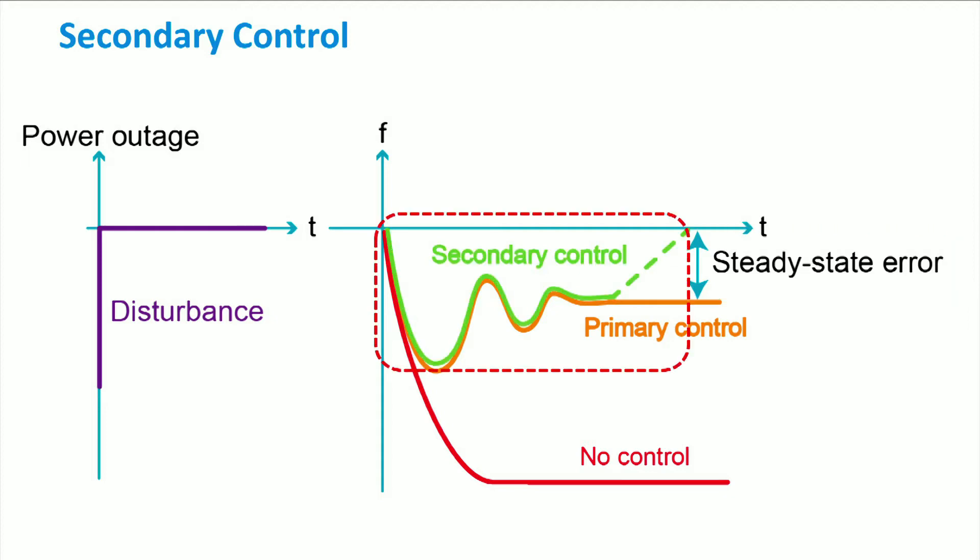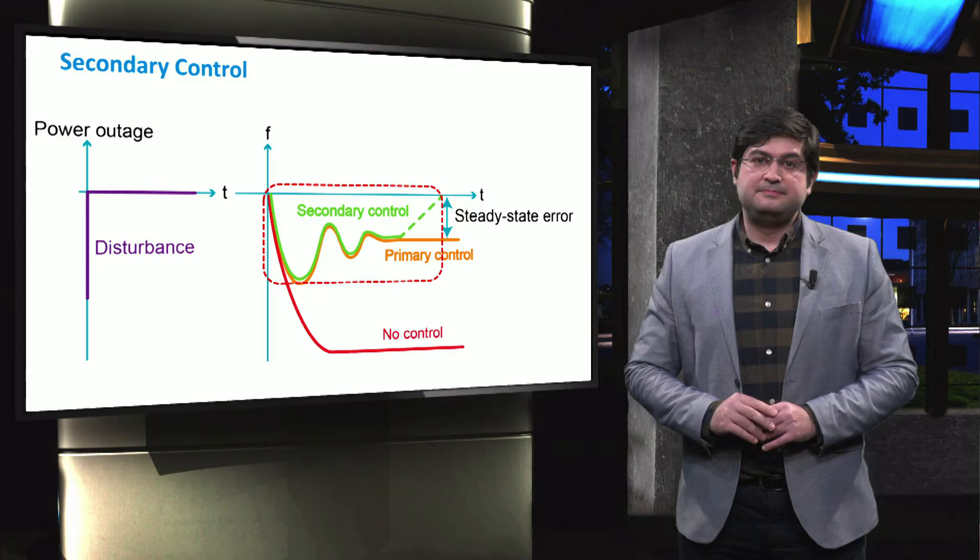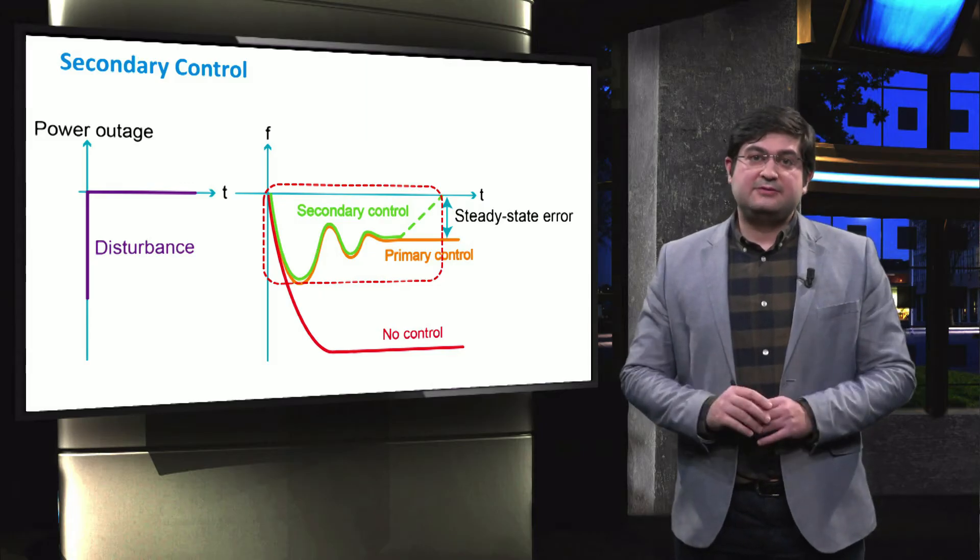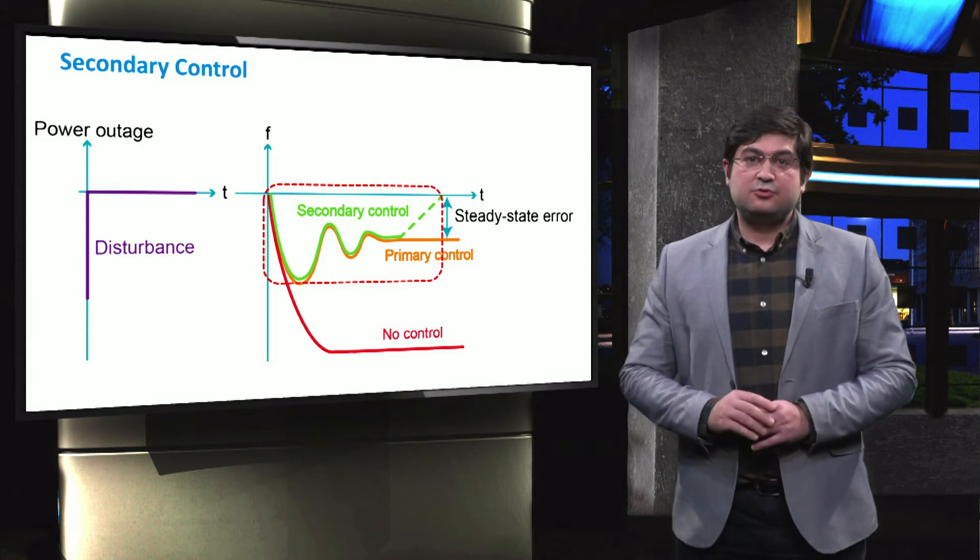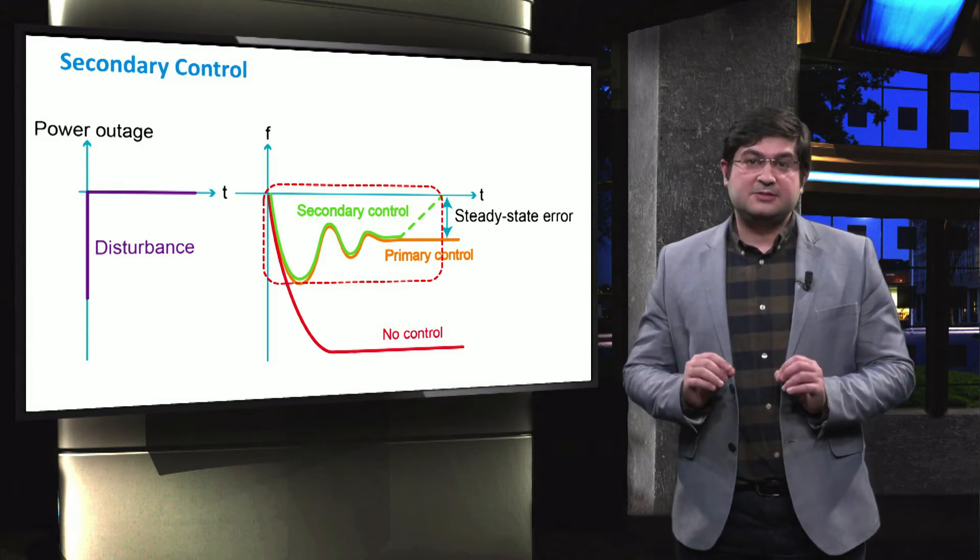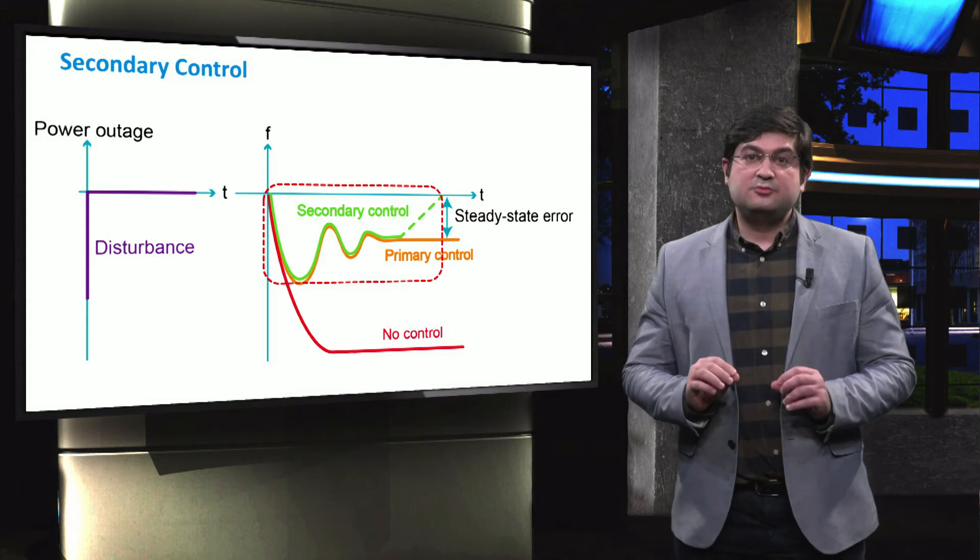To this end, the secondary frequency control, or the so-called load frequency control, is implemented that is activated after the primary control. It is an automatic control that restores the frequency back to its reference value in a centralized way, from one minute up to several minutes.